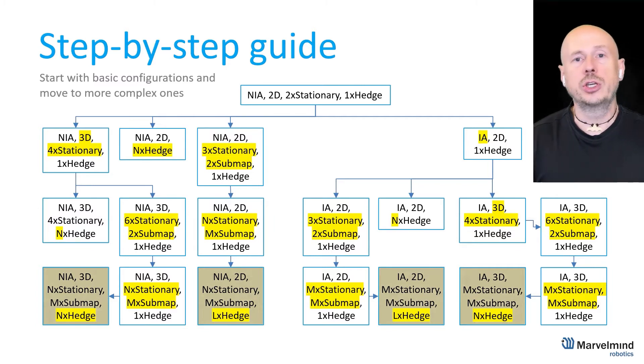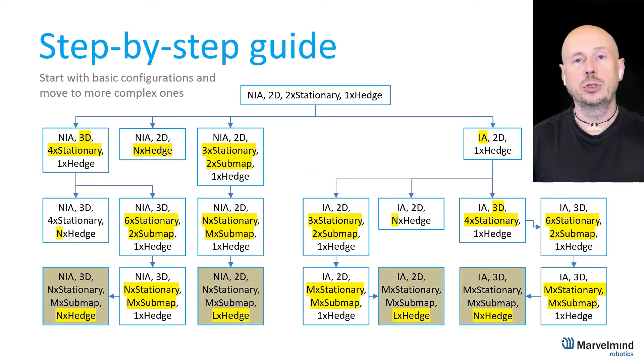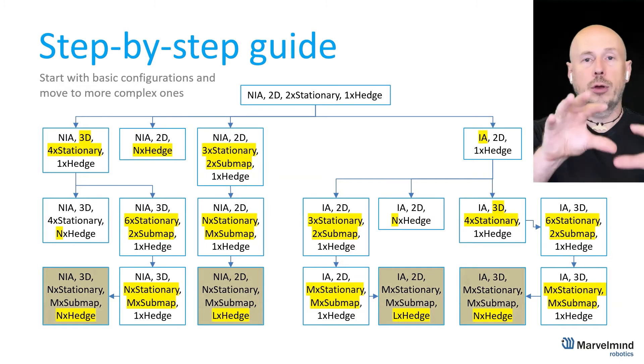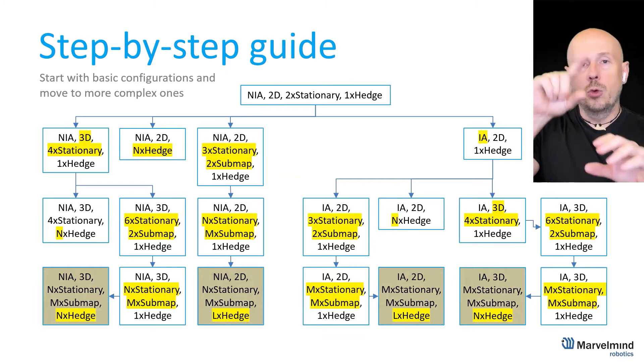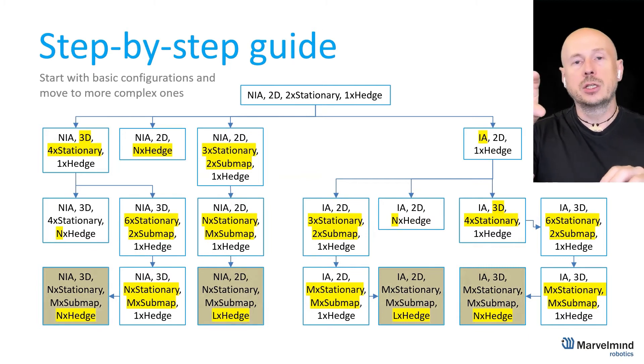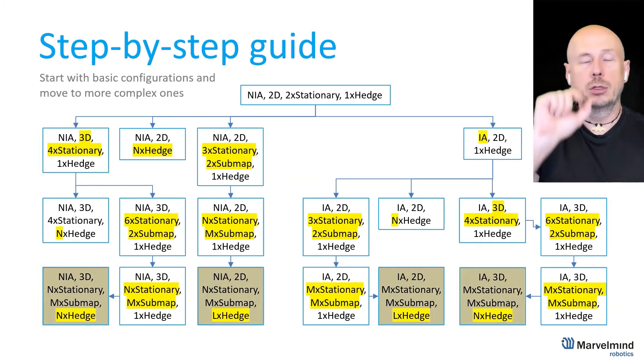The whole point of this video is increase one step at a time complexity. So from non-inverse architecture and one sub map and one beacon mobile beacon you move to inverse architecture. The same number of beacons but from the non-inverse to inverse. Then from inverse architecture 2D you moved to 3D. It automatically requires increasing from two station beacons to four station beacons. And the last step that we just discussed you increased from one sub map of four beacons to two sub maps of six beacons. Four and four and two overlapping beacons or common beacons for both.